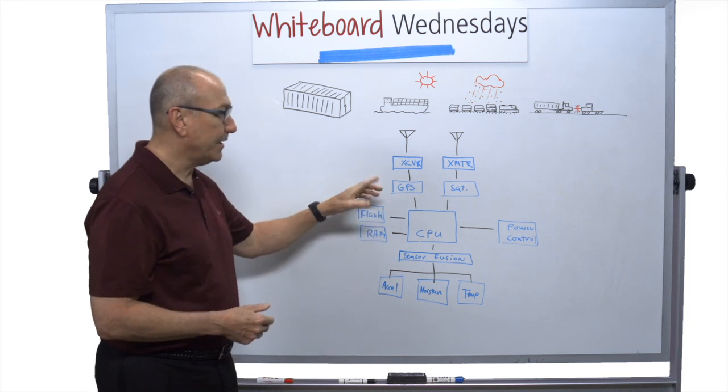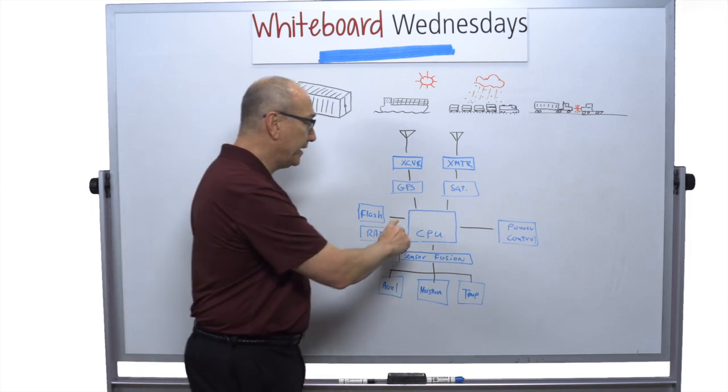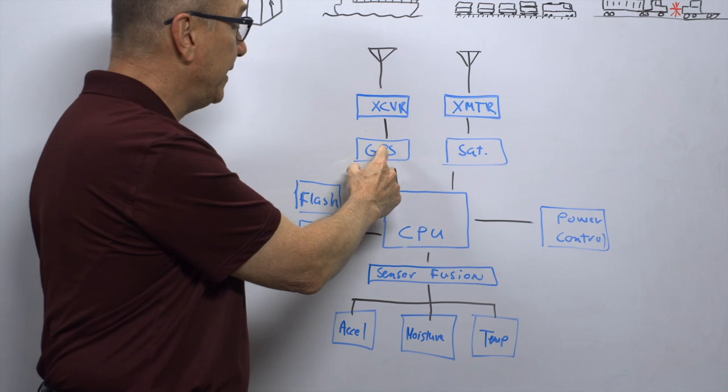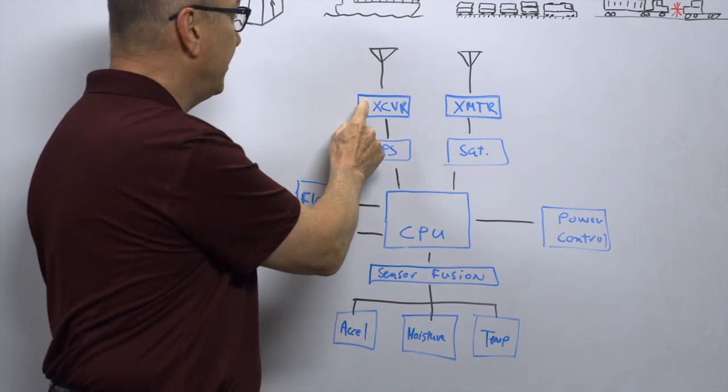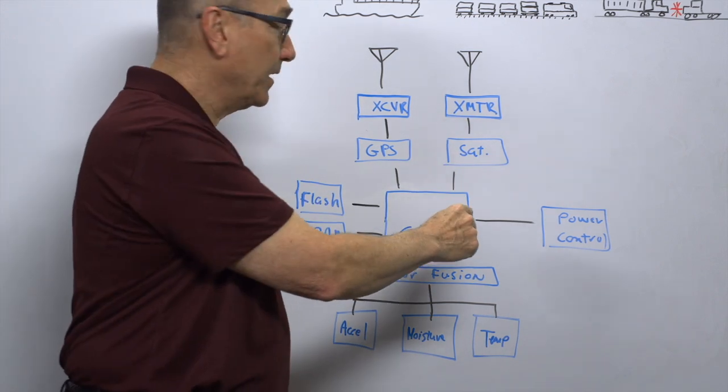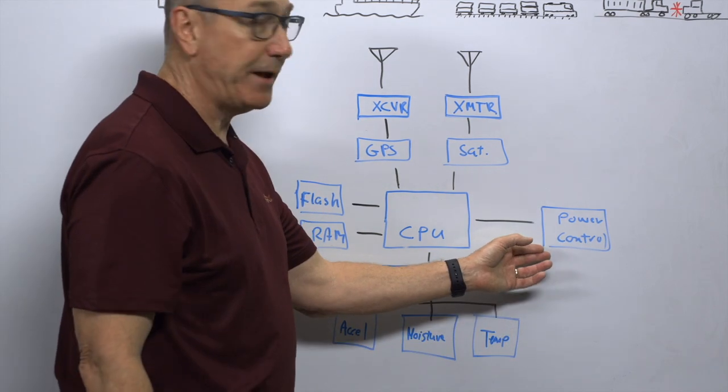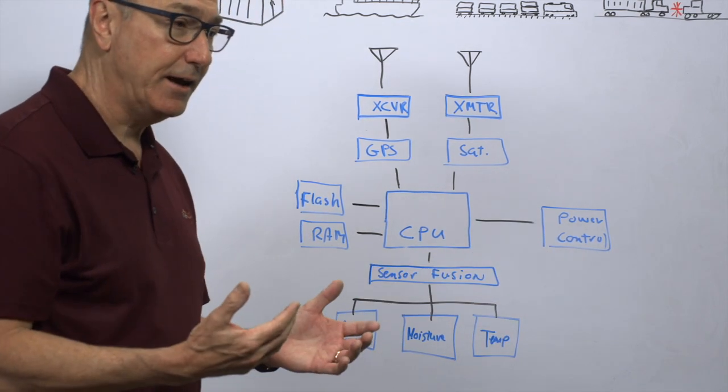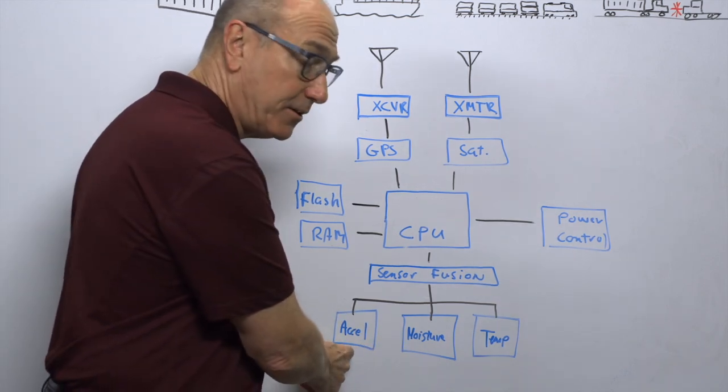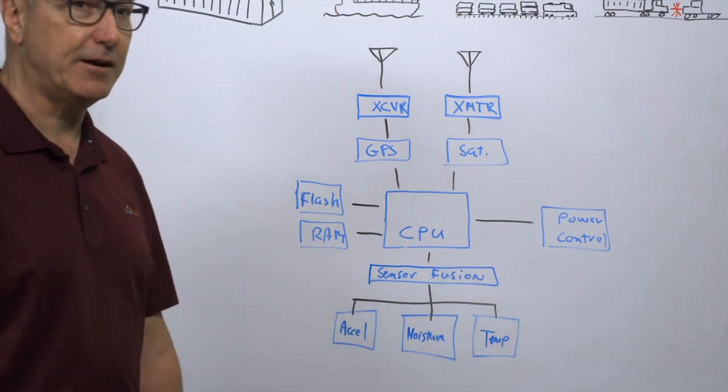Okay, so let's see what this thing would consist of today and how we could make it less expensive. Well, in any system, you're going to have a CPU in the middle, of course. We talked about GPS functionality. So we'd have a GPS baseband processor and an RF receiver. We'd have a satellite transmitter, baseband and transmitter. We'd have flash and RAM, some kind of power control function that would let the system sleep and wake it up at the right time. And we'd have sensors for acceleration, for moisture, for temperature, and then something to do sensor fusion on all of that.